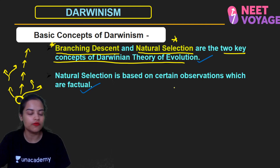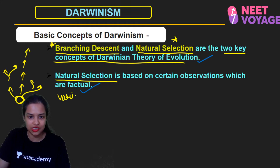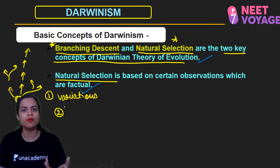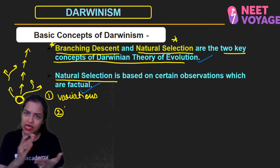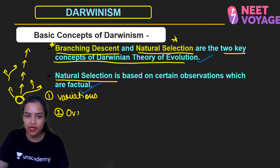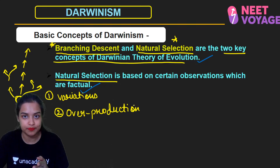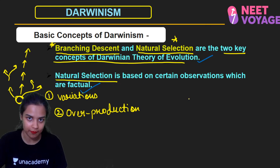Natural selection is based on factual observations. There are many varieties in nature — different variations exist. For example, Darwin's finches: some are tree finches, some are insectivorous finches, some are ground-eating finches, some are cactus feeders — these are different varieties. In every variety, what happens? Overproduction. Every animal's nature is to continuously reproduce. The reproductive ratio increases geometrically: 1, 2, 4, 8, 16 — we call this a geometric ratio.